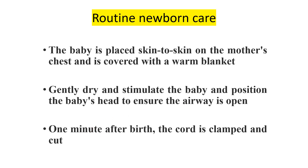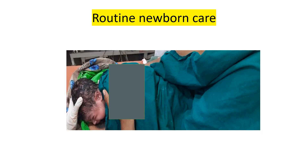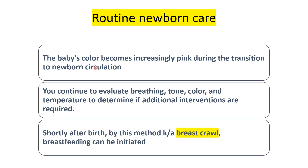After one minute, we clamp the cord. In this position, the baby is prone on the mother's chest and slightly over the abdomen, with the baby's head turned to one side and covered with a warm cloth after drying.